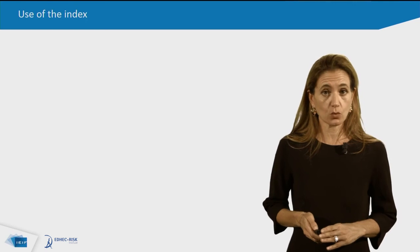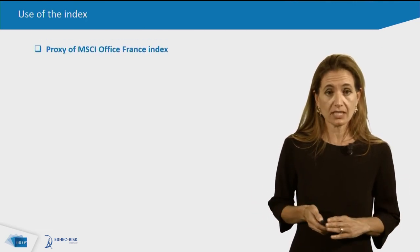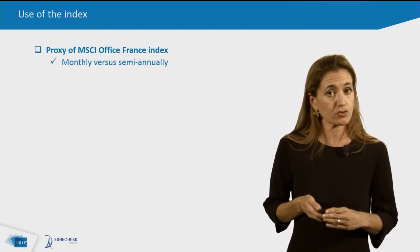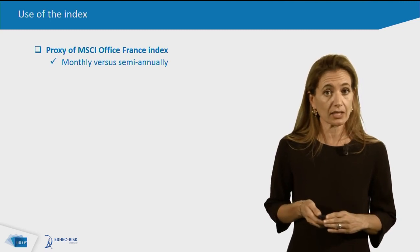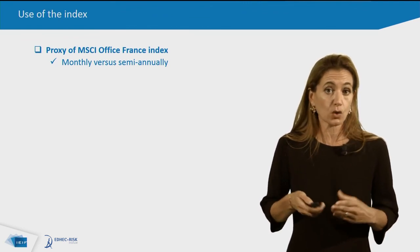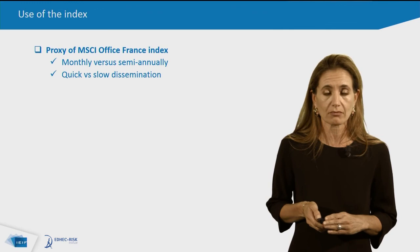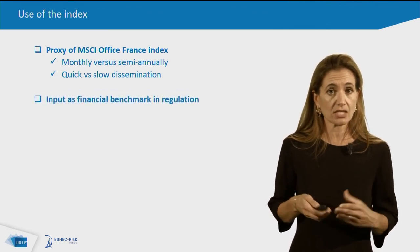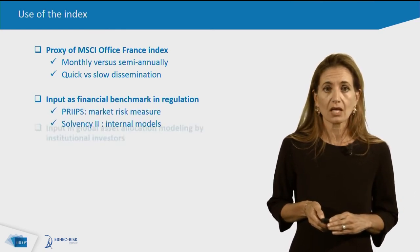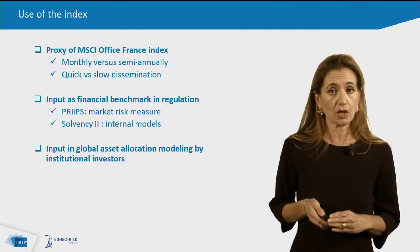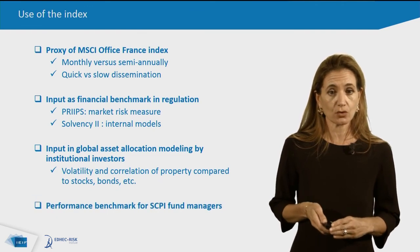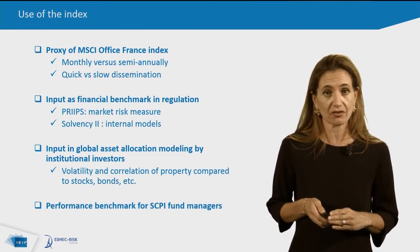Having set the scene, what are the possible uses of our index? Firstly, our index could be a good proxy for the MSCI Office France Index, based on monthly frequency versus semi-annual, and can therefore quickly disseminate market information. Secondly, our index can be used as a financial benchmark in regulation, either for PRIIPs or Solvency II. Thirdly, our index can be used in global asset allocation modelling. Finally, our index can be used as a performance benchmark for SCPI fund managers.